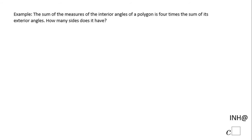Welcome or welcome back at I Need Help at C-Score. In this example we have to find how many sides a polygon has. We know about that polygon that the sum of the measure of the interior angles of this regular polygon is four times the sum of the exterior angles.